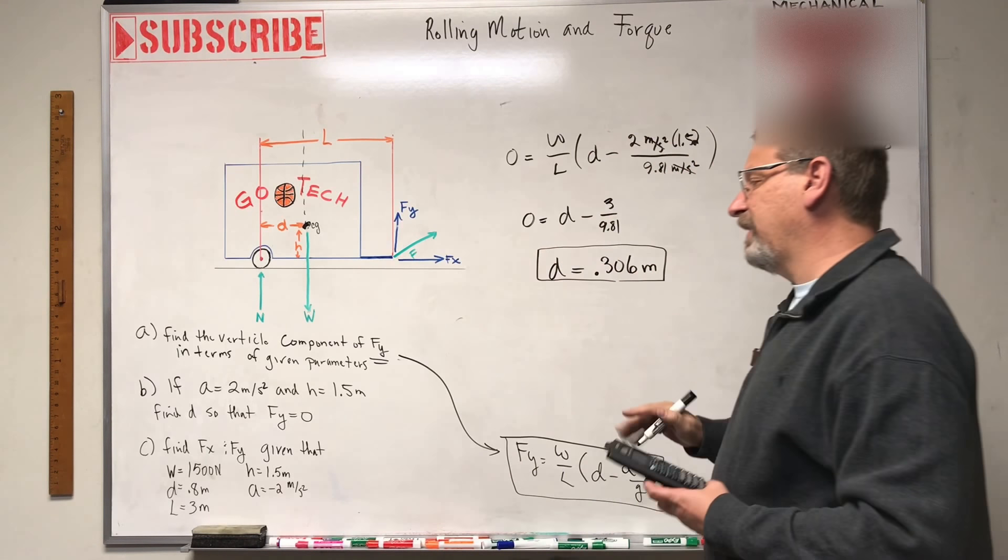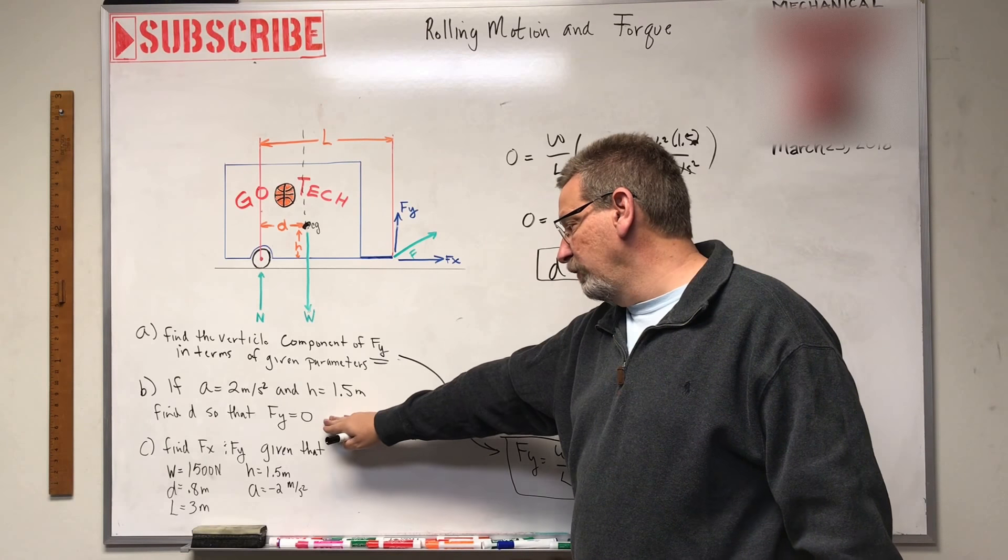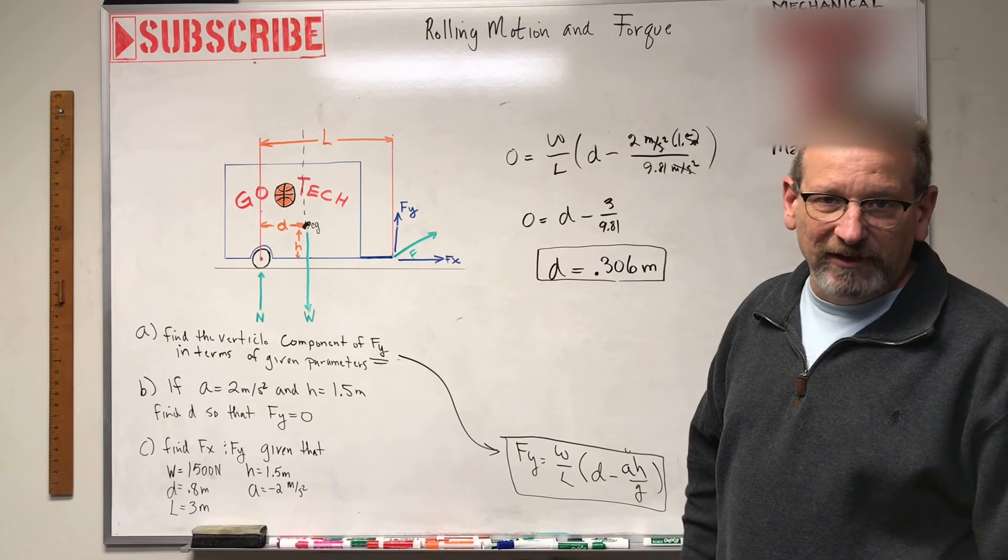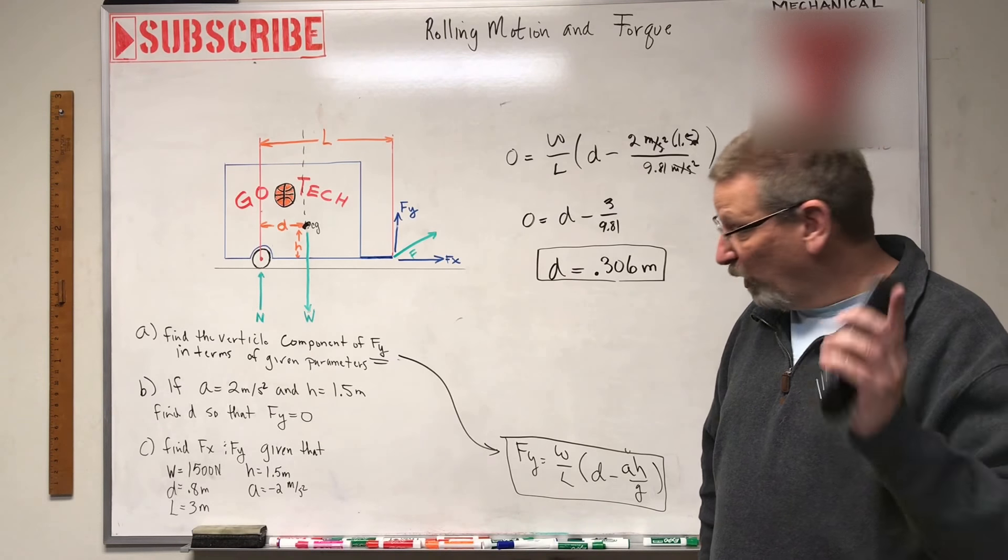So in order to satisfy B, part B here, to make Fy equal to 0, D needs to be 0.306, doesn't it? We only got one more part to go.